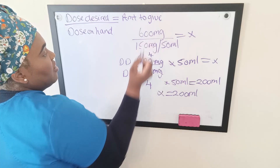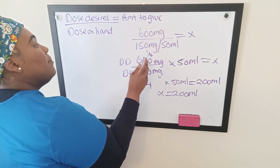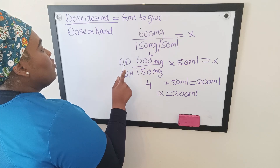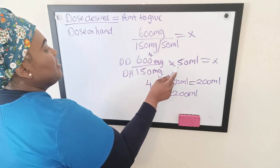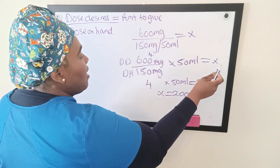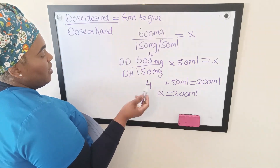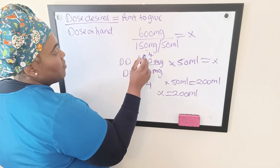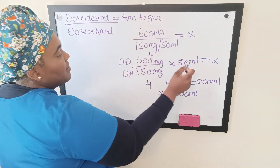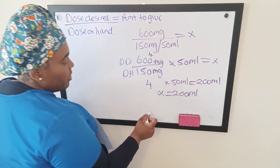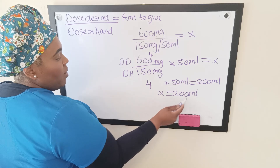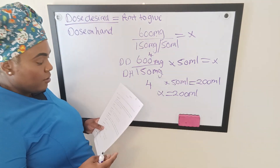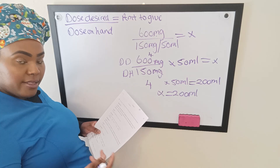Our desired dose was 600 milligrams; our available dose was 150 milligrams for every 50 mils. Dose desired divided by dose on hand multiplied by quantity equals the amount to give. So 600 milligrams divided by 150 milligrams equals 4; 4 multiplied by 50 gives us 200. The dosage of 600 milligrams equals 200 mils. Hope that makes sense.